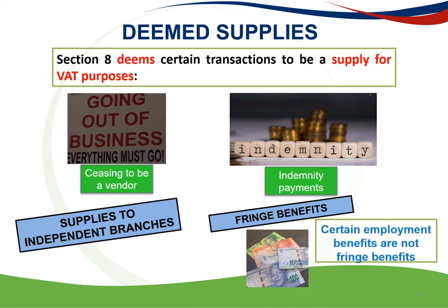The following employment benefits are NOT subject to VAT: cash allowances (e.g., entertainment, subsistence and travel allowances), subsidies, long service awards, the supply of meals and refreshments, free or cheap holiday accommodation, residential housing, interest-free and low-interest loans, paying a debt on behalf of an employee, share incentive plans, pension and medical aid fund contributions, payment of home telephone expenses, bursary schemes, international transport, the supply of a motor car at less than market value, and any fringe benefit to the extent that it is granted in the course of making exempt supplies.